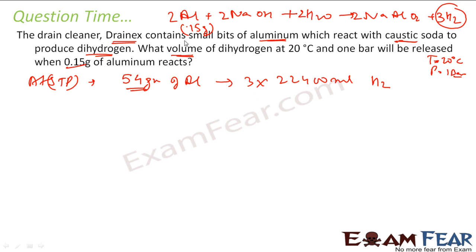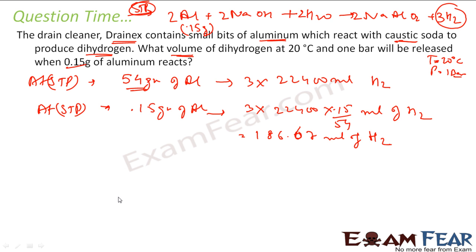So at standard temperature and pressure, 0.15 gram will give how much? So 0.15 gram of aluminum at STP will give you 3 into 22400, this number, into 0.15 by 54 ml of hydrogen. If you solve that, this is 186.67 milliliter of hydrogen gas. So at standard temperature and pressure, 0.15 gram of aluminum will give 186.67 milliliter of hydrogen gas.